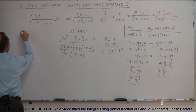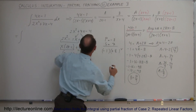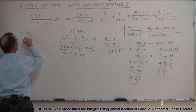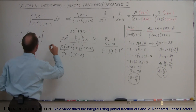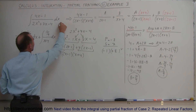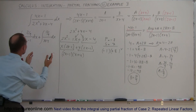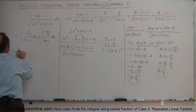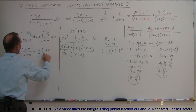I can now write the integral as the sum of two integrals, replacing a and b with their values. The first integral is (2/9)/(2x - 1) dx, and the second is (17/9)/(x + 4) dx.